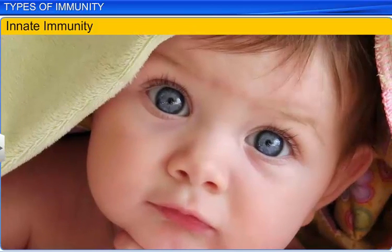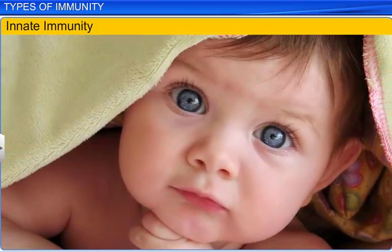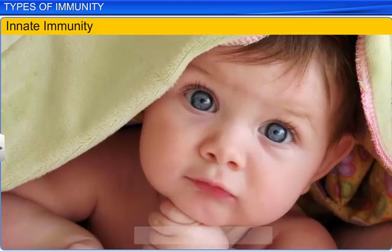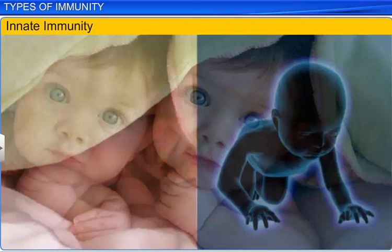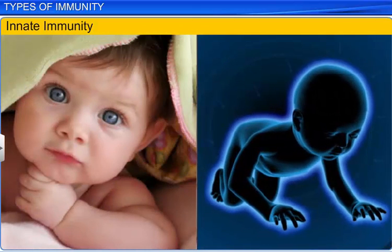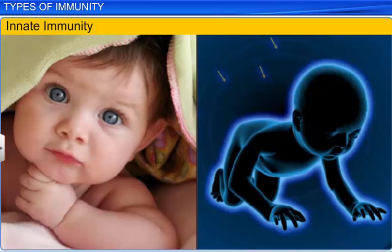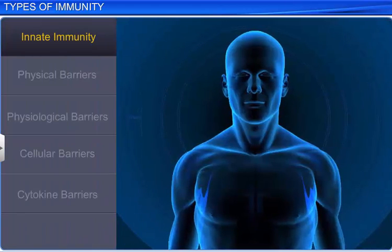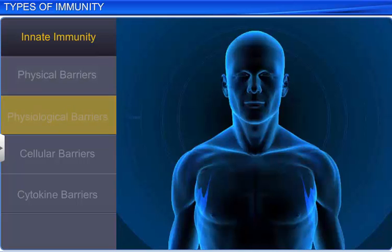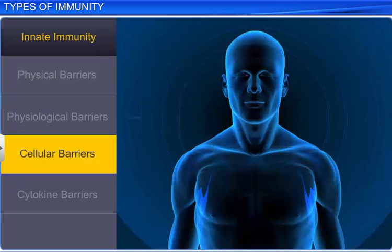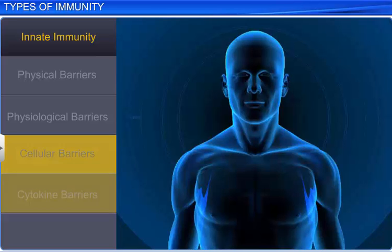Innate immunity is something we all possess since birth. It is a non-specific kind of defense, which provides different types of barriers to the entry of foreign agents to our body. Four different types of barriers are provided by innate immunity: physical barriers, physiological barriers, cellular barriers, and cytokine barriers.